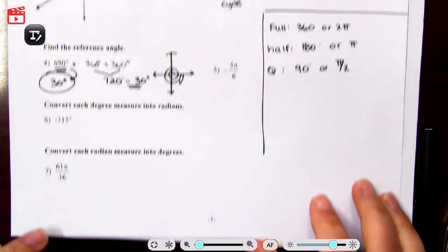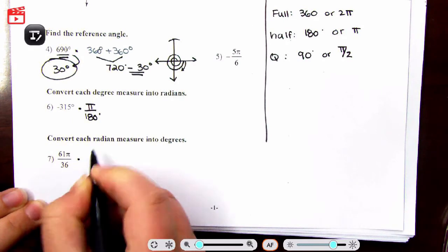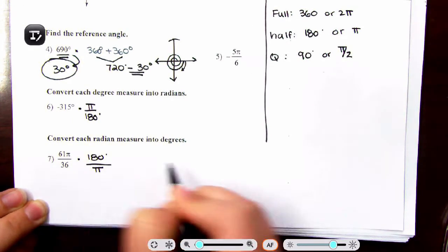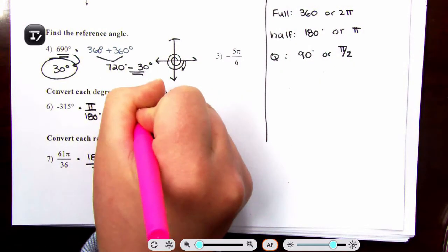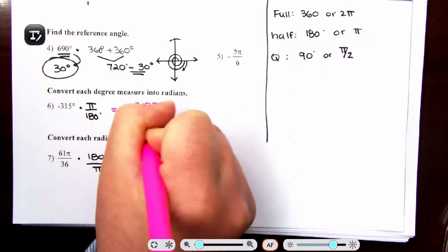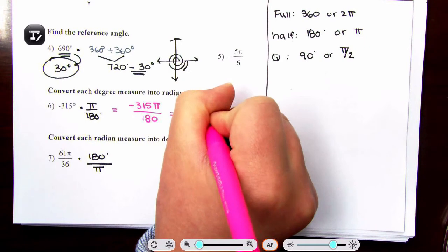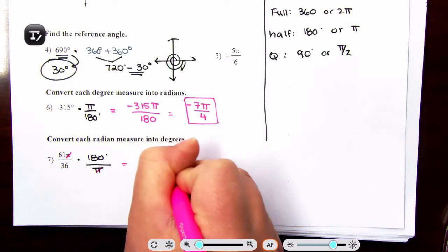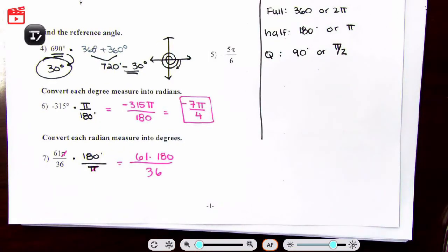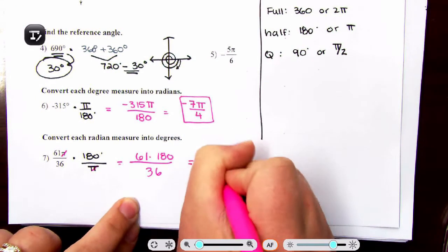For questions six and seven — converting: if you have degrees and want radians, multiply by π/180. If you have radians and want degrees, multiply by 180/π. Please don't give a decimal answer. Negative 315° times π/180 simplifies to negative 7π/4. For the radian-to-degree conversion, the π's cancel: 61 times 180 divided by 36 gives 305 degrees.